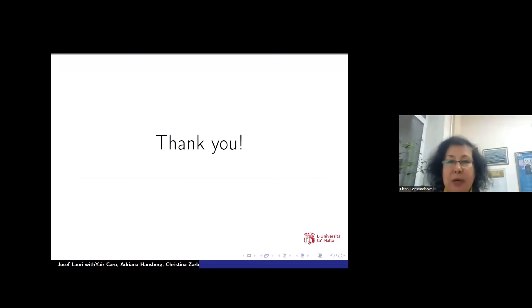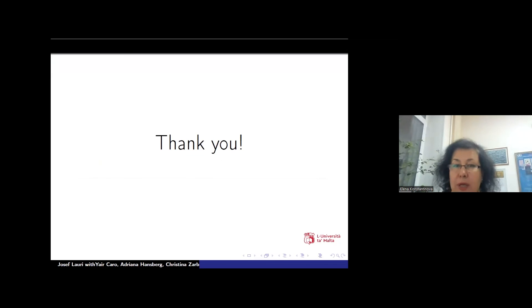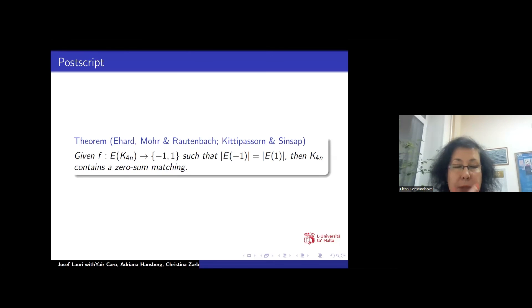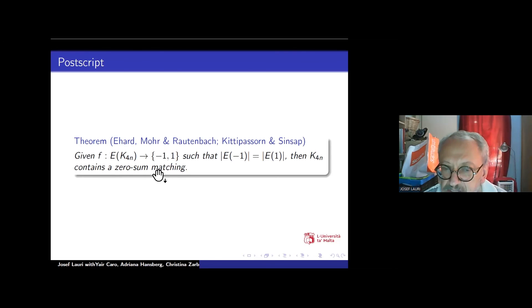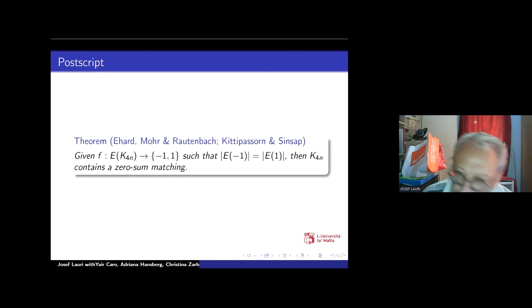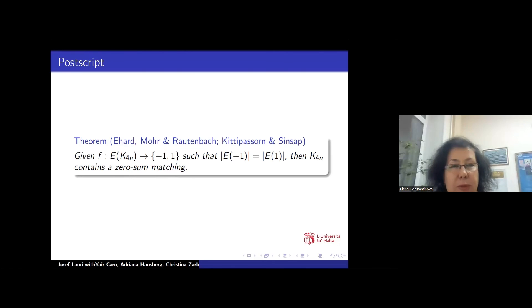Thank you very much. Any questions? — I have two simple questions. On the last slide, why is it important to have 4|n? — So that the matching will have 2n edges, which is even, so we can say zero-sum. Without that condition we'd need to say zero or almost zero, so 4|n makes it neater.